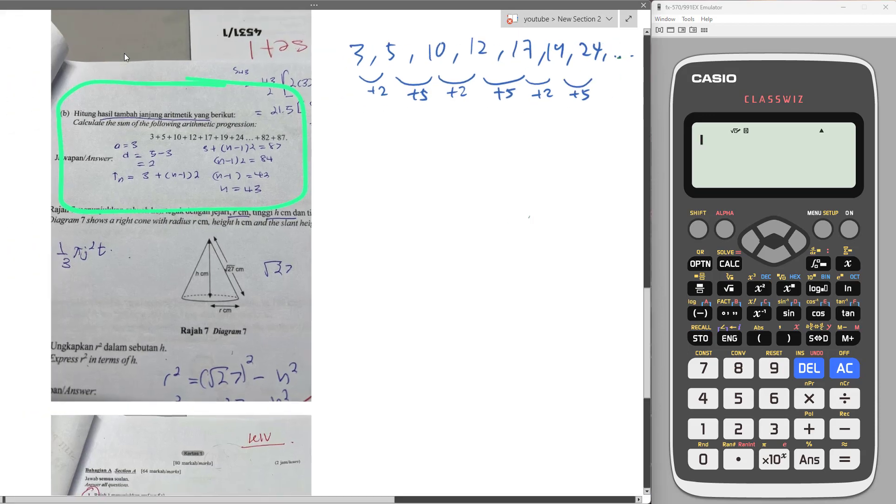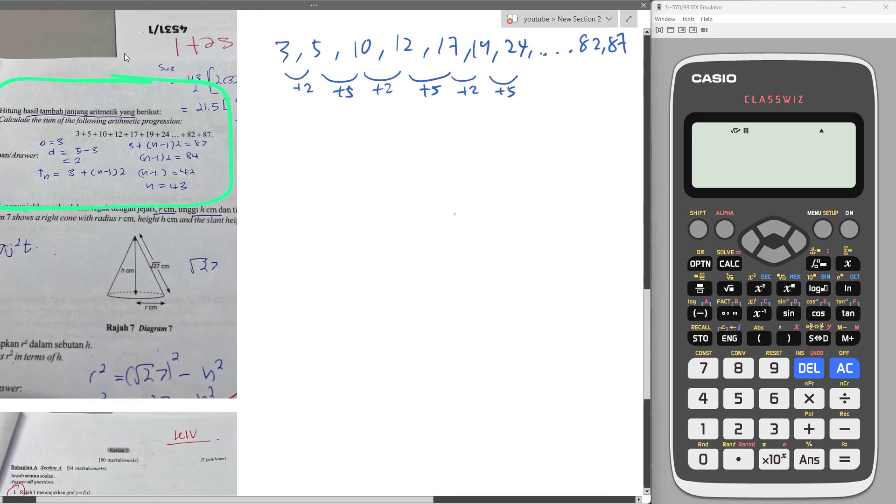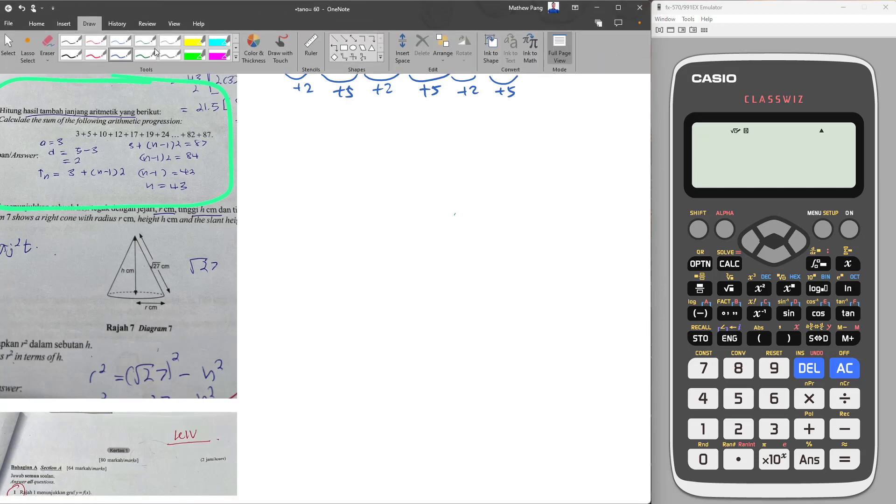So you know that this is not just one progression. Whenever you see they don't have any constant common difference here, it basically means they actually joined two or more progressions. So obviously what I want to do first is I'm going to separate them.